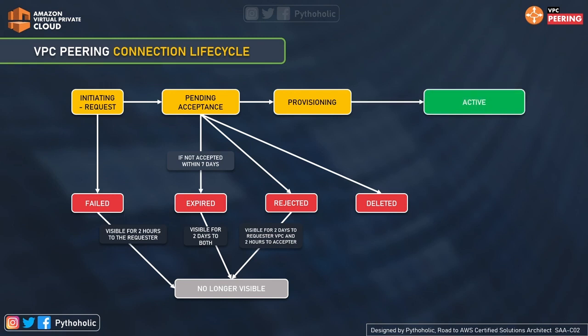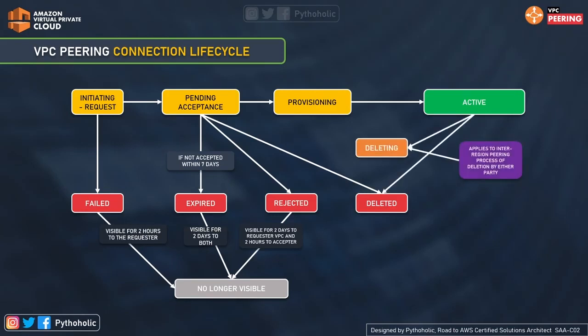Once the VPC peering connection request has been accepted, it will soon be in the active state. Once it is active, you can make use of the peering connection. In this active state you cannot reject it anymore, but if you want to close it you can delete it. For deleting the inter-region VPC peering connection, this can be initiated by either party when the status is active, or it can be sent by the owner of the accepting VPC that has raised a delete request while in the pending acceptance state.